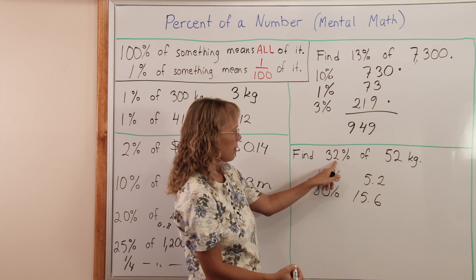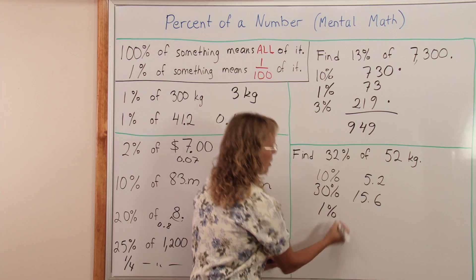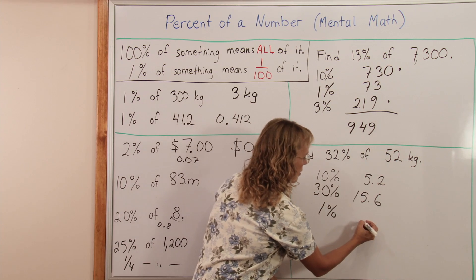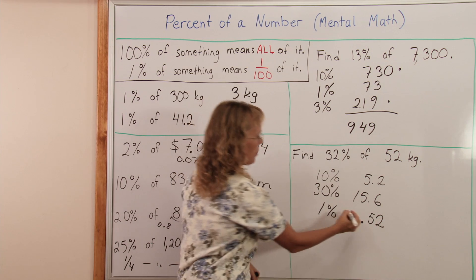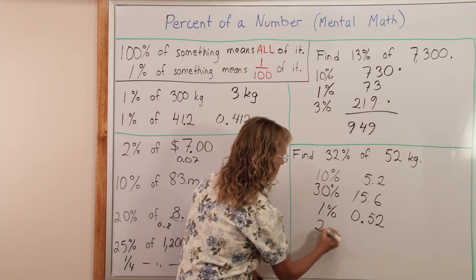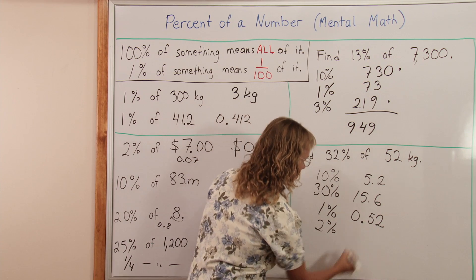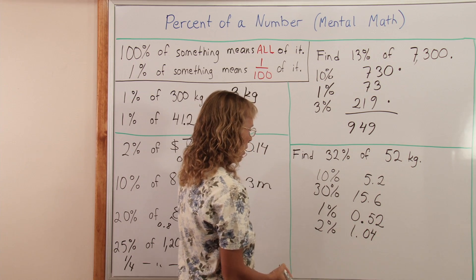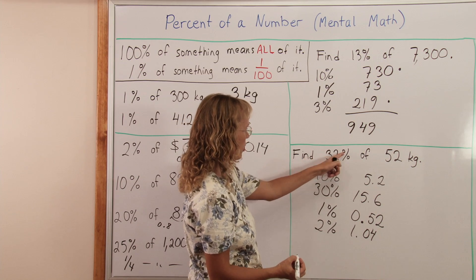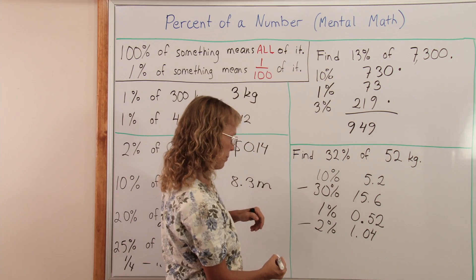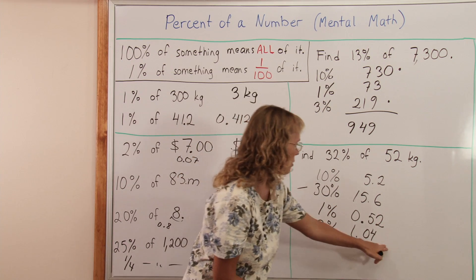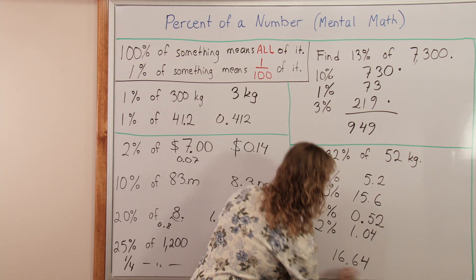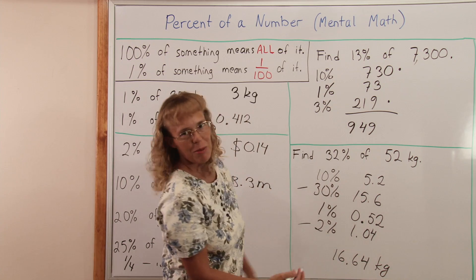You can go to this number and move the decimal point 2 steps right in front of 5. Then 2% is double that. Now lastly we will add. It's 32% here, so we need to add this one and this one: 15.6 and 1.04. We get 16.64 kilograms. Always remember to include the unit.